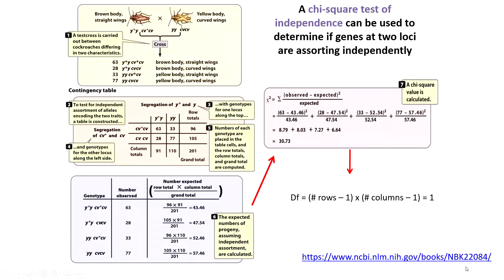So can we test for this? We were expecting a 9:3:3:1 ratio but didn't get that. How do we know whether the difference between what we observe and what we expect is due to chance or not? Is it due to chance, or are the genes linked? The chi-squared test of independence asks: are these genes linked to each other? That's what explains the differences between observed and expected values. We apply the chi-square test in a slightly different way since we're looking at two different genes.